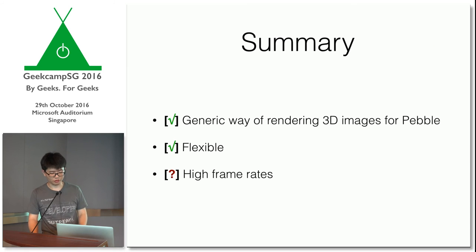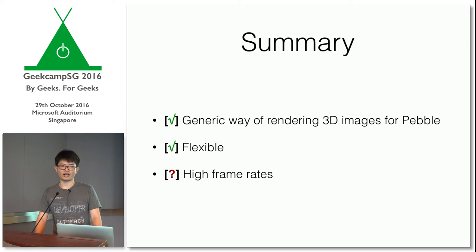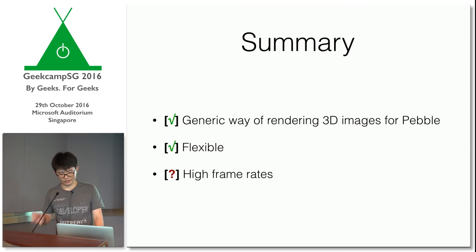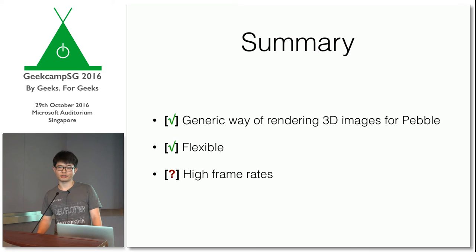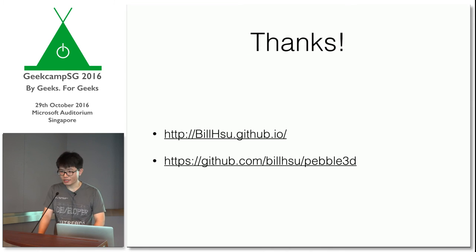Summary: these are the goals listed at the beginning. We want a generic way of rendering 3D images for Pebble — check, we did that. It should be flexible — check, we did that. But high frame rates, I put a question mark because 2 frames per second is maybe not that high. There are ways to improve it — for example, right now each pixel takes one byte, maybe you can reduce it to one bit per pixel, or do some other optimizations. That's definitely possible. That's about it. Thank you.